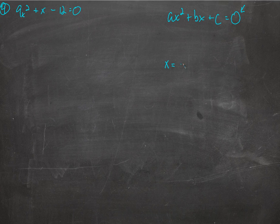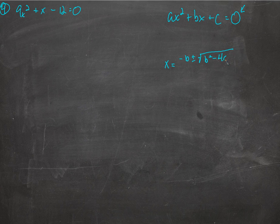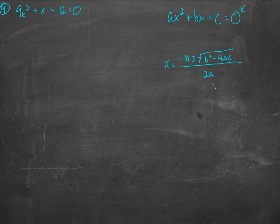Then we can find x by using the quadratic formula: negative b plus or minus the square root of b squared minus 4ac, all over 2a. There it is. So we plug a in here and here, b right there and there, c right there — whatever those numbers are — and we're on our way.